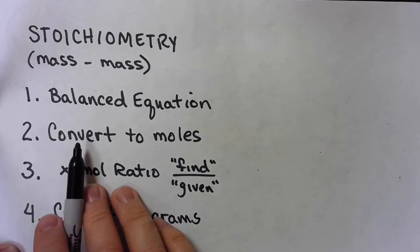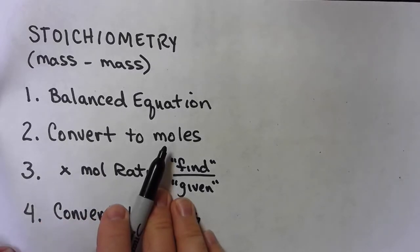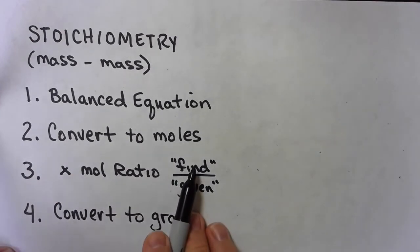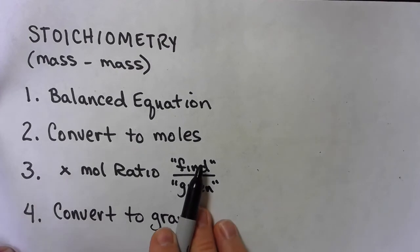The second step is whatever, you'll be given some kind of a mass. We want to convert that into moles. The next step, we're going to multiply by the mole ratio, which is what we're trying to find. The moles of what we're trying to find over moles of what we're given. And we get those numbers from the balanced equation.